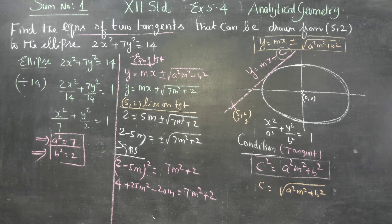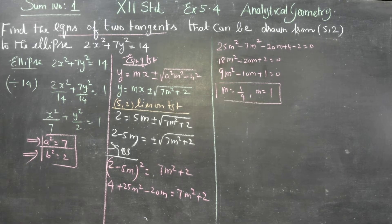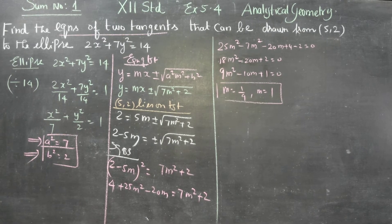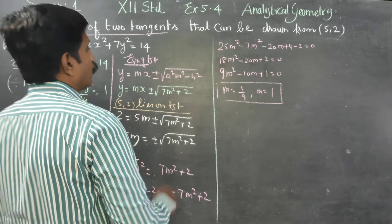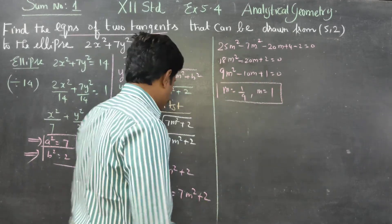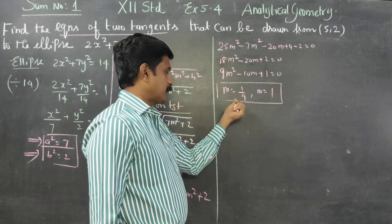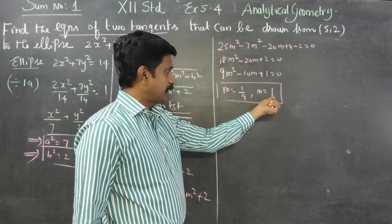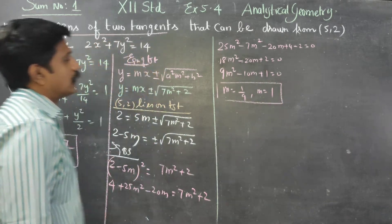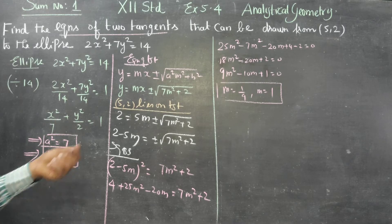Rearranging all terms to one side gives a quadratic equation. Simplifying: 9m² - 10m + 1 = 0. Solving this quadratic gives m = 1/9 and m = 1.